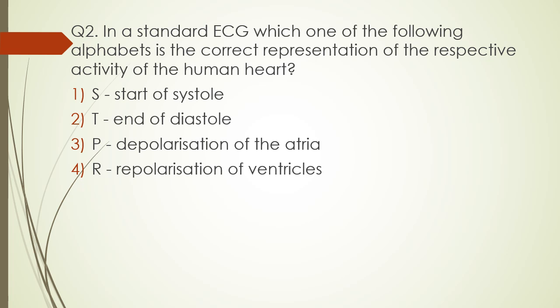The correct answer is option three. P wave represents the depolarization of the atria. T wave represents the repolarization of the ventricle. R wave is part of the QRS complex, which represents depolarization of the ventricle. T does not represent end of diastole.